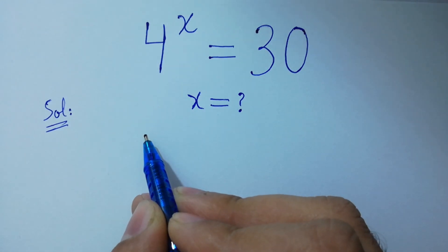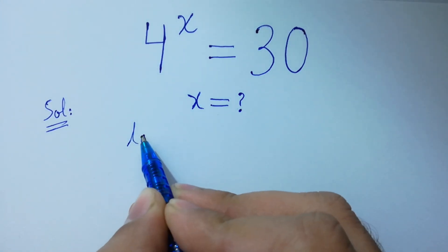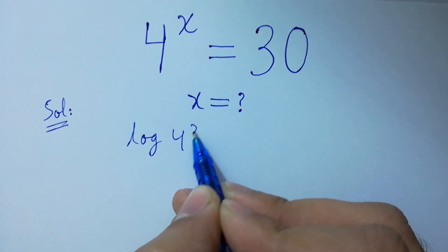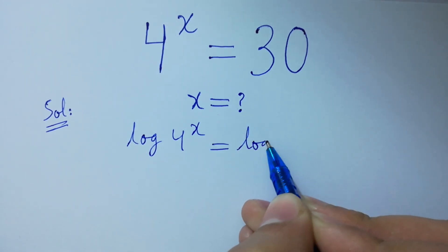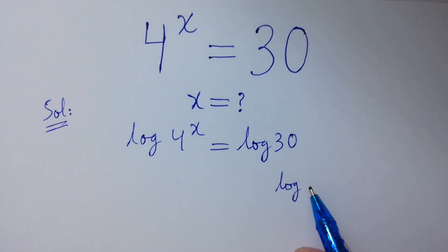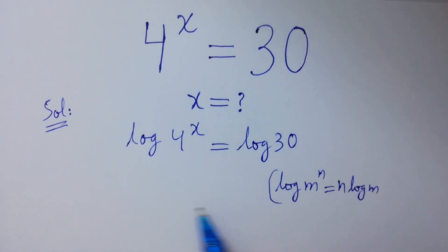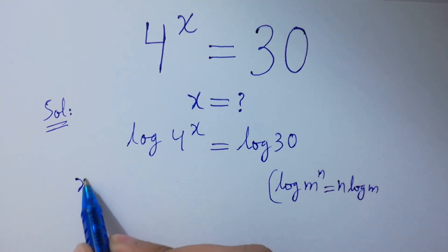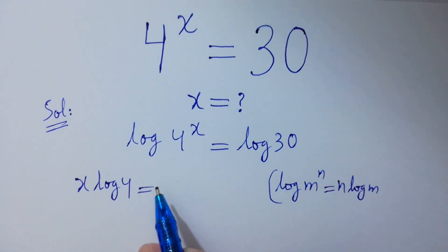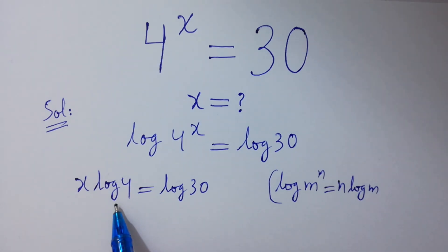To solve this, first of all take log on both sides. Log 4 to the power x equals log 30. Since log m to the power n equals n log m, so it will be x log 4 equals log 30. To get rid of log 4, divide by log 4 on both sides.